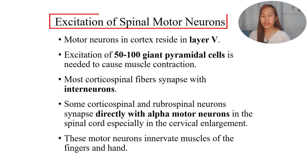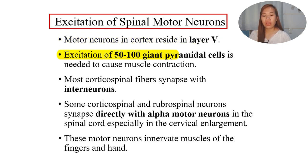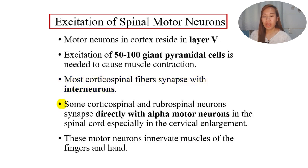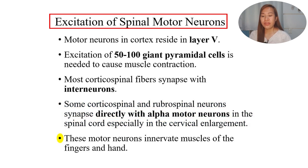Regarding the excitation of spinal motor neurons - from layer five of the cortex, excitation of 50 to 100 giant pyramidal cells is needed to cause muscle contraction. Most cortical spinal fibers synapse with interneurons. But some will synapse directly with anterior motor neurons at the portion of the cervical enlargement, which will control the movements of the hands and fingers. Some corticospinal and rubrospinal neurons synapse directly with alpha motor neurons in the spinal cord, especially in the cervical enlargement, and these motor neurons innervate muscles of the fingers and hands.